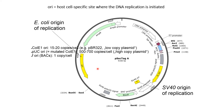Since this vector can replicate in two different hosts, it has two origin of replication sites — one for E. coli, where it will replicate in the E. coli host, and another one is SV40, which replicates in the phage. Depending on the vector, this origin of replication also varies.